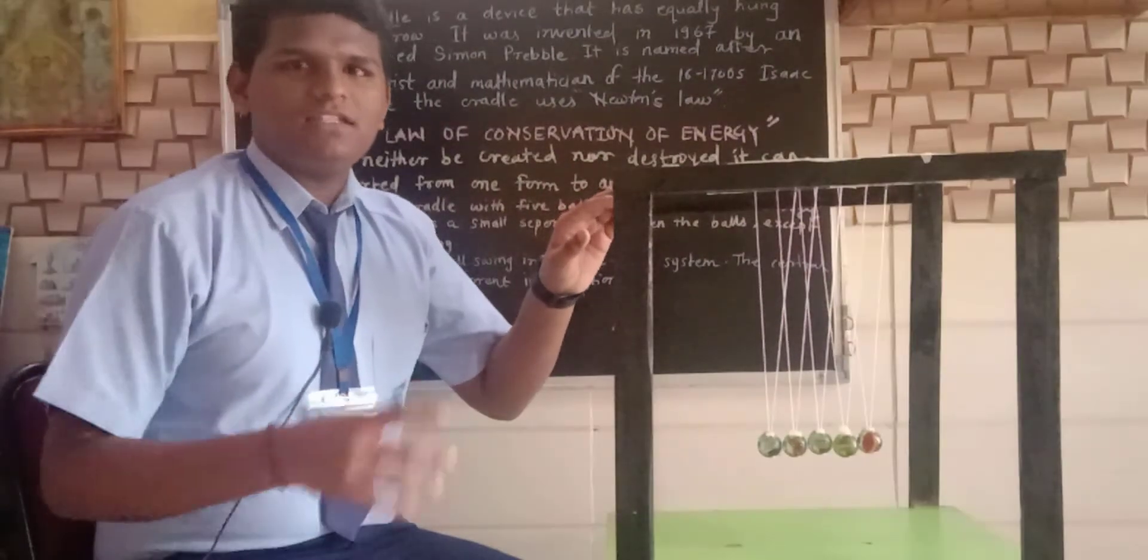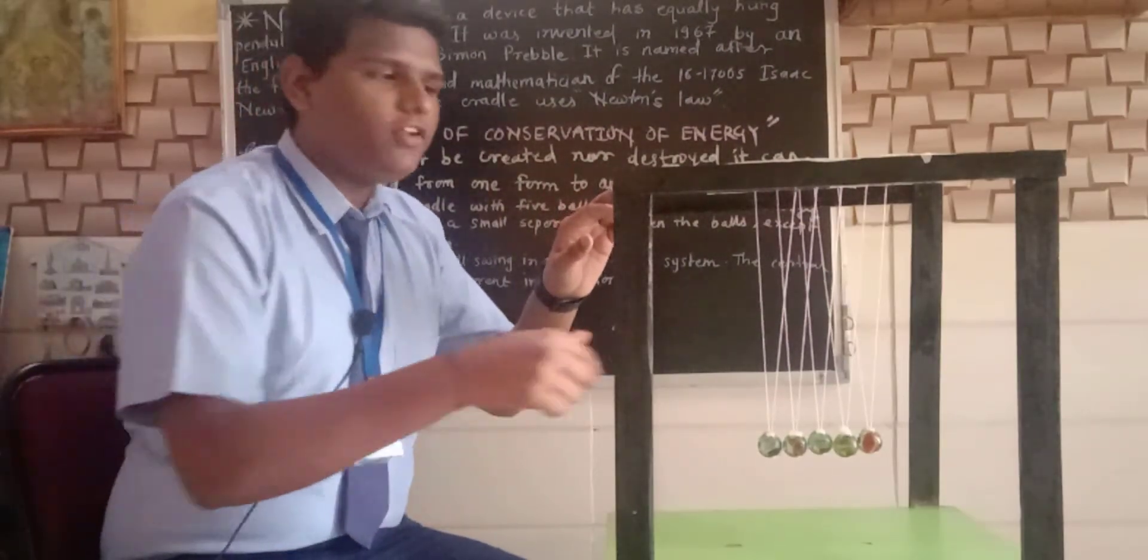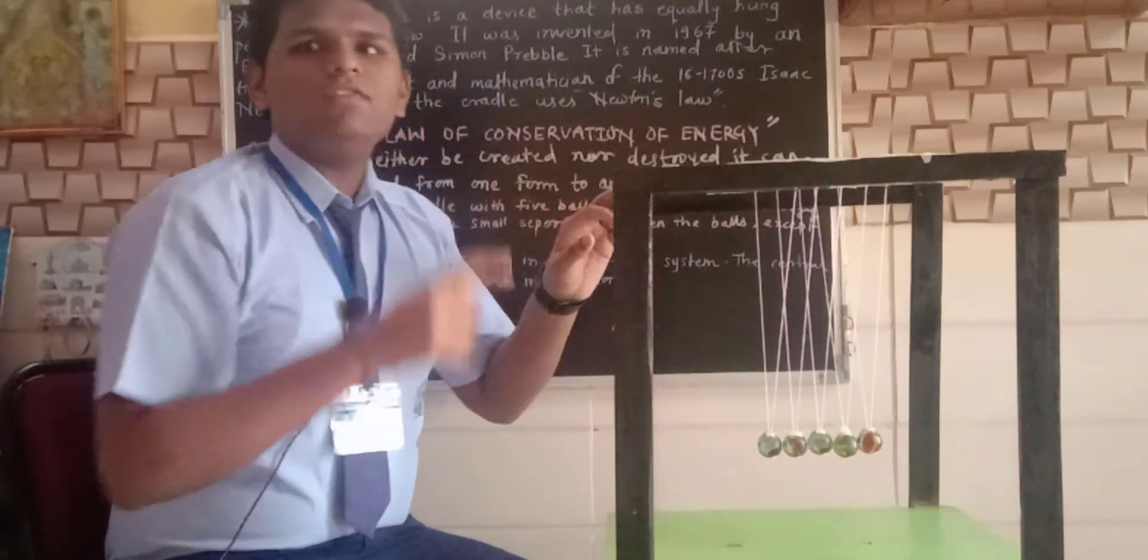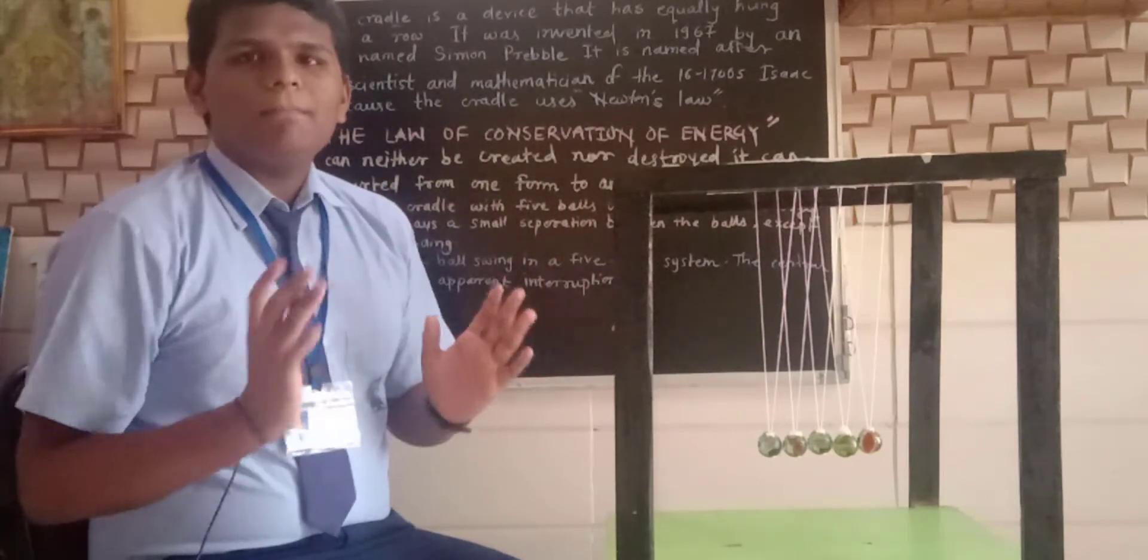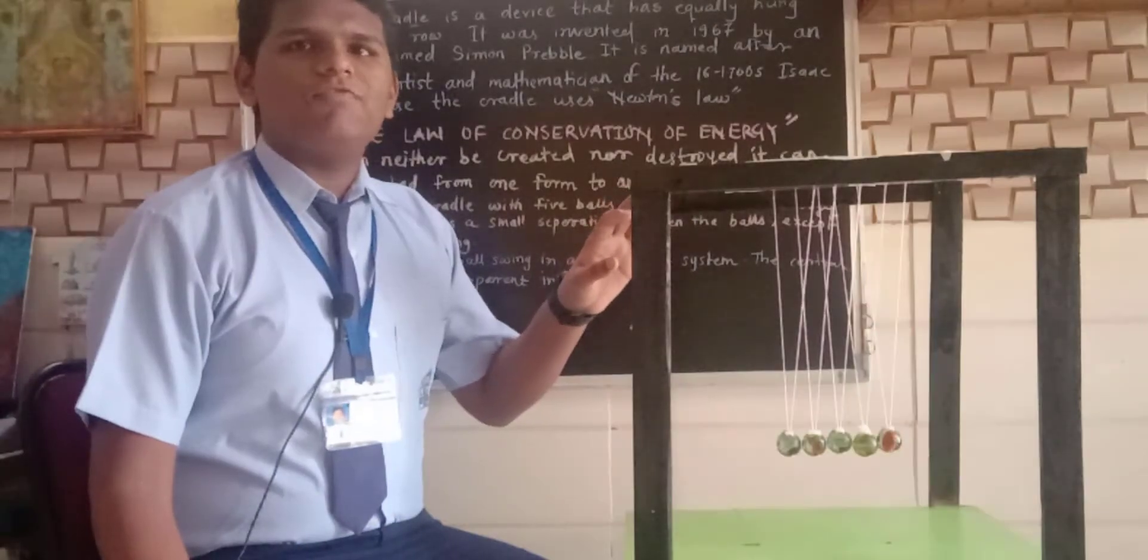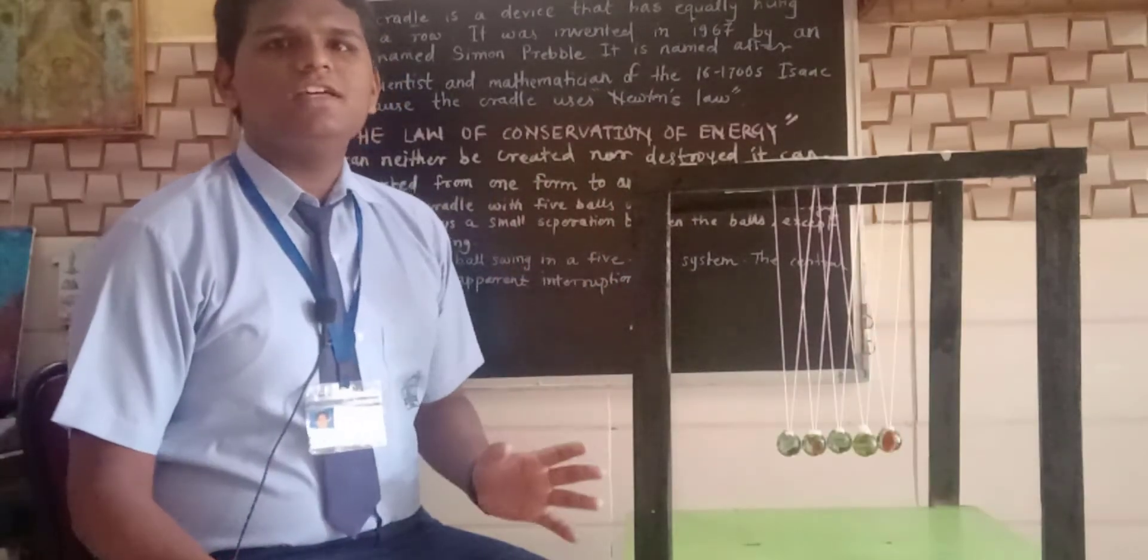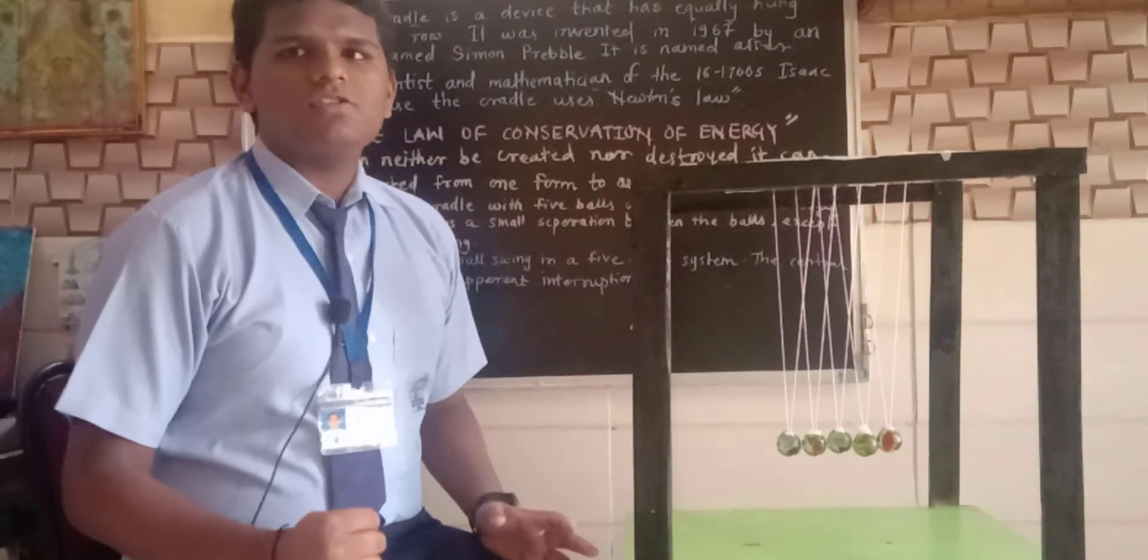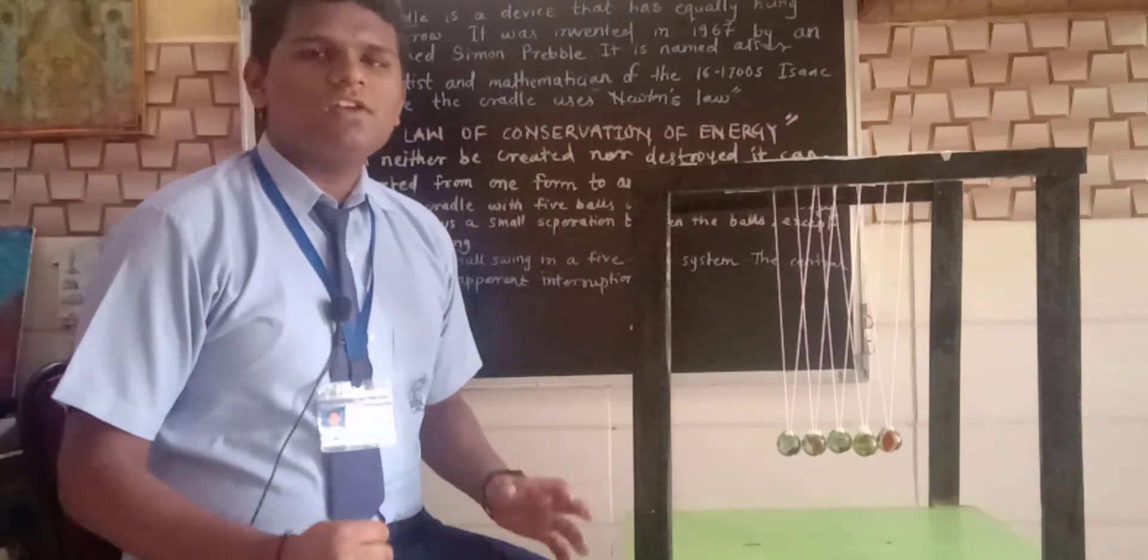Newton's Cradle is a device that has equally hung pendulums in a row. It was invented in 1967 by an Englishman named Simon Preble. It is named after the famous scientist and mathematician Sir Isaac Newton because the cradle uses Newton's laws.